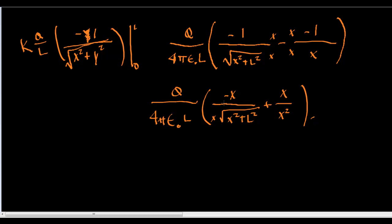this becomes 1. And this is a negative, so I'll flip the order of these. So I get 1 minus x over the square root of x squared plus l squared times q over 4 pi epsilon naught l. And then, remember, I pulled out 1 over x, so we put an x out here.